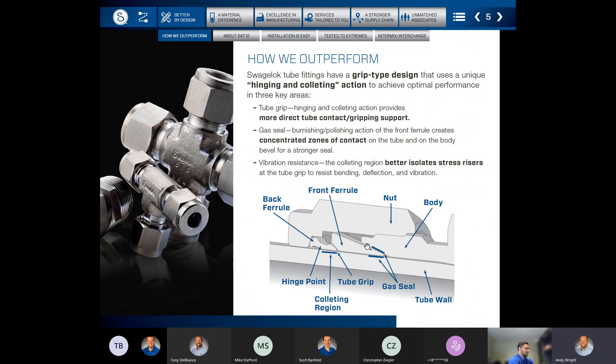Now the importance and the benefit of having a two ferrule design is that the other characteristics, the tube grip and vibration resistance, are going to be achieved in the back ferrule.